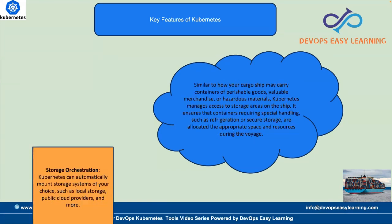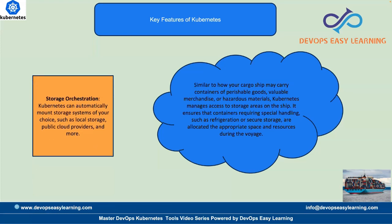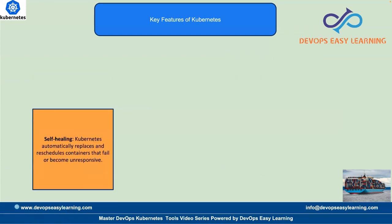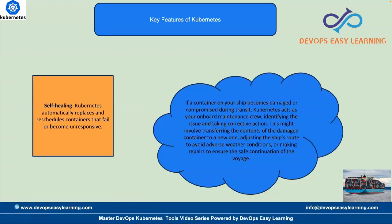Another feature is storage orchestration. Kubernetes can automatically mount a file system and mount storage into containers. This is similar to how a cargo ship may carry containers with persisting goods — you may have containers with perishable goods, containers with valuable goods, containers with merchandise, and containers with different types of items.